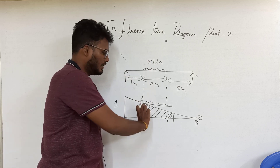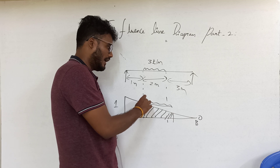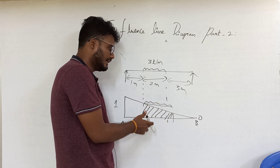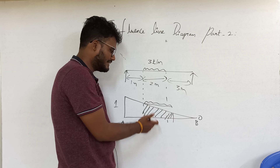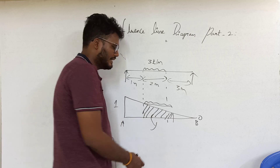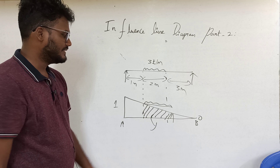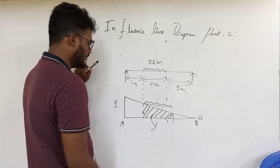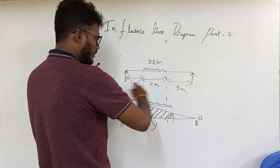In the case of UDL, we multiply the intensity of load with the area of the ILD. What is the area of this ILD? That is the area of a trapezium. So for total 6 meters, the vertical ordinate is 1, meaning 1 by 6.